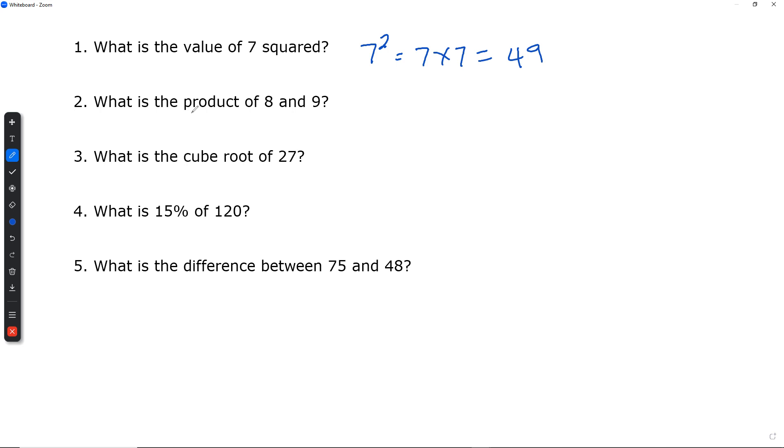What is the product? Product means multiply. What is the product of 8 and 9? So that's going to be 8 multiplied by 9. All right, 8 times 9, which is 72.